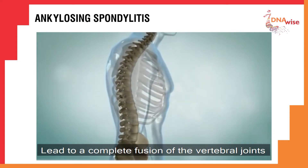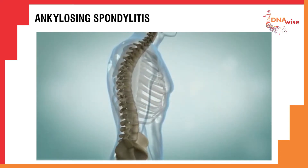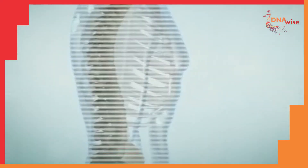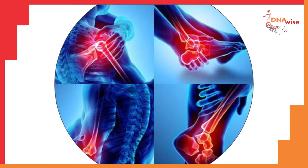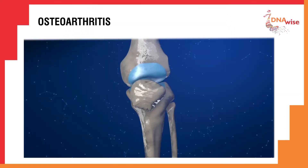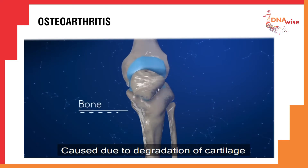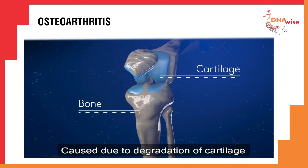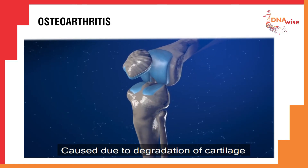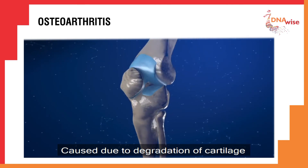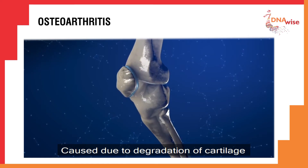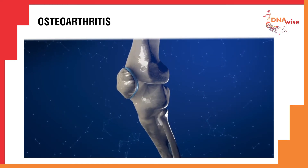Ankylosing spondylitis mainly affects the spine, but in severe cases can involve other joints as well. Osteoarthritis is a condition which occurs when the protective cartilage — a tissue that acts like a cushion between the joints — gradually wears down and the bones begin to scrape against one another.